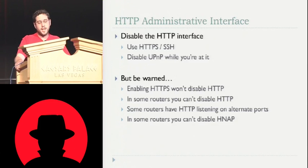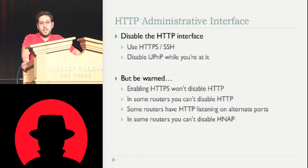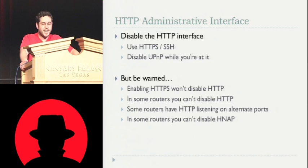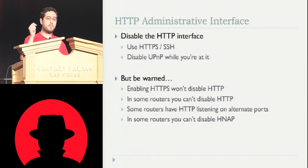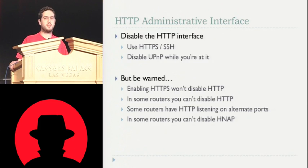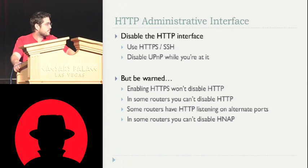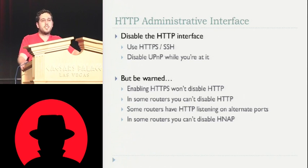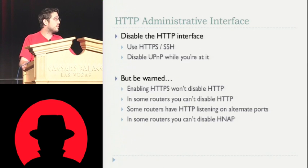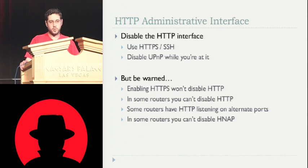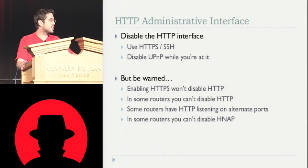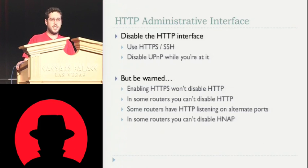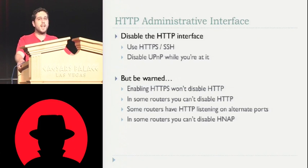However, there are some problems. Don't just enable HTTPS and leave HTTP enabled, because then I can still get to HTTP. Some routers actually don't let you disable HTTP — there's a checkbox to enable HTTPS but you can't disable HTTP at all. Some routers have HTTP services listening on alternate ports; this router, for example, listens on both port 80 and port 8080, so make sure all of those ports get disabled. Also, HNAP — the home network administration protocol — uses HTTP, not HTTPS, and in some routers you cannot change or disable it, so I can still go after that if you have a weak password.